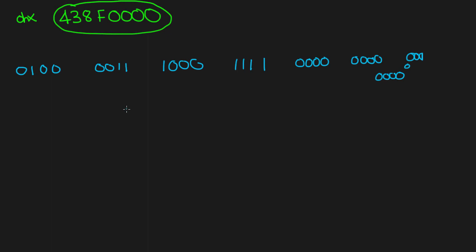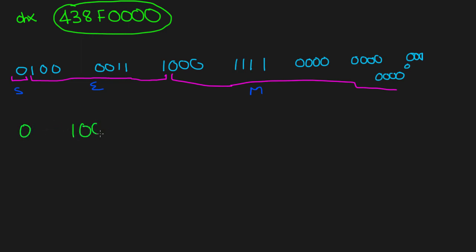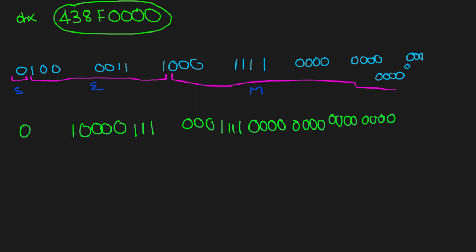Now we're essentially doing the steps in reverse. We look at the same 1-8-23 bit structure. The first bit is the sign bit. The following eight bits are the exponent, and the remaining bits represent the mantissa. Labeling these out, the sign bit is zero, the exponent is 10000111, and the mantissa follows with 00001111 and trailing zeros.